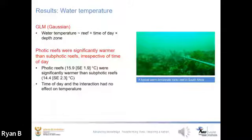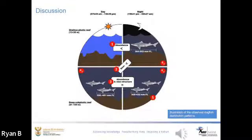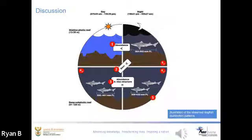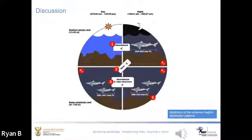To summarise the observed patterns: first, higher abundance was recorded at night on photic reefs, suggesting diel movements are occurring. Second, dogfish recorded at night on photic reefs were larger than those on subphotic reefs, suggesting size segregation also occurs. Third, consistent day and night abundances and size structures on subphotic reefs, with individuals below 462 mm, suggest those undertaking the diel movement are moving from an alternative diurnal habitat. Fourth, sex segregation is clear as males dominated the observed reef population. Lastly, there is a definite photic preference, as typically dogfish were only recorded in low light and dark environments.